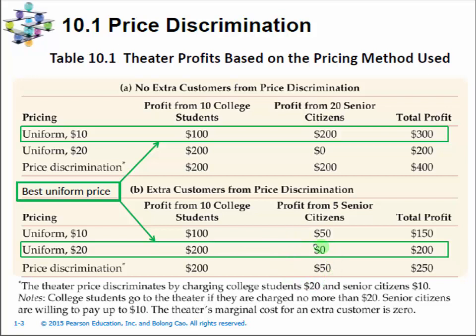If we can still discriminate customers and give senior citizens a $10 discount, they pay $50, improving profit from $200 to $250. The key here is that there is zero marginal cost for the movie theater to bring in more customers — their expenditure is pure profit.